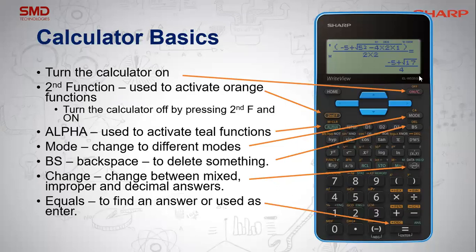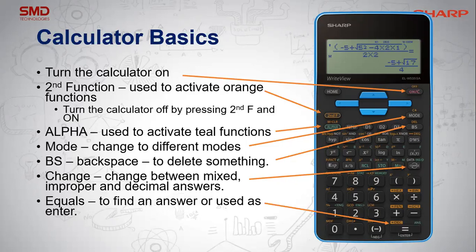I'm going to run through very briefly the functions on your calculator. You've got the on button — kind of important. The second function button activates all your orange functions. Your alpha key activates your memory keys and statistics functions. Then you've got mode on the right-hand side, which allows you to change between the four different modes. Underneath mode is something called BS — it means backspace. And then change will change the answer of your calculation, from a fraction to a mixed fraction to an improper, and then to a decimal.